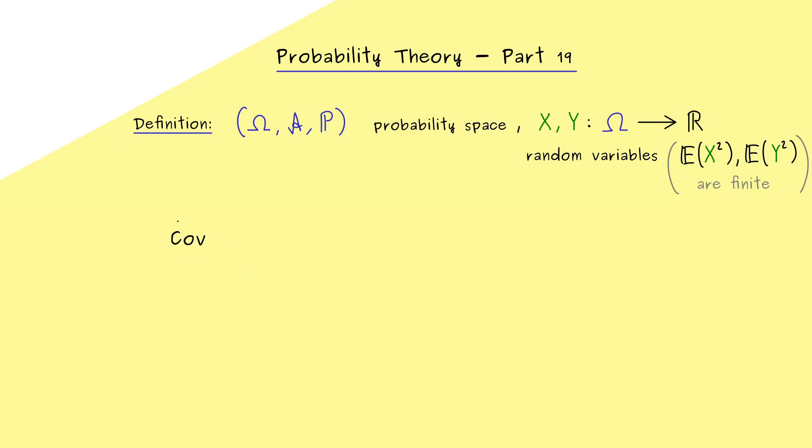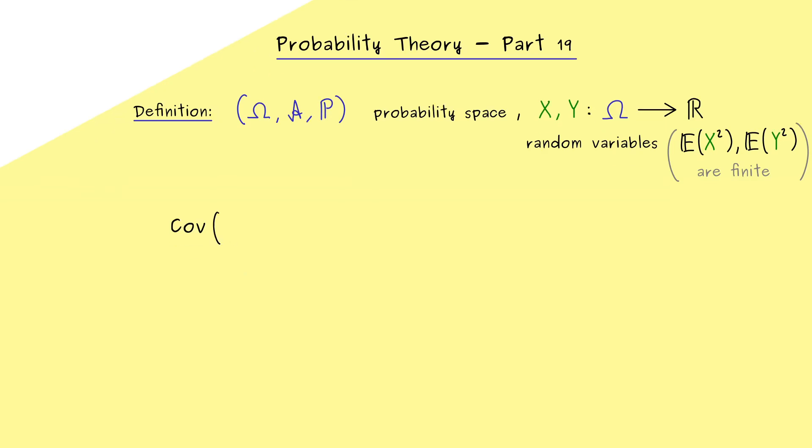And here you see, this is the common abbreviation we have. And now indeed, the definition is not hard to remember, because it is very similar to the variance. First, we take the deviation of X to its average. So X minus expectation of X. And then we multiply this by the deviation of Y to its average. So the square, you know from the variance, is now a product of two different random variables.